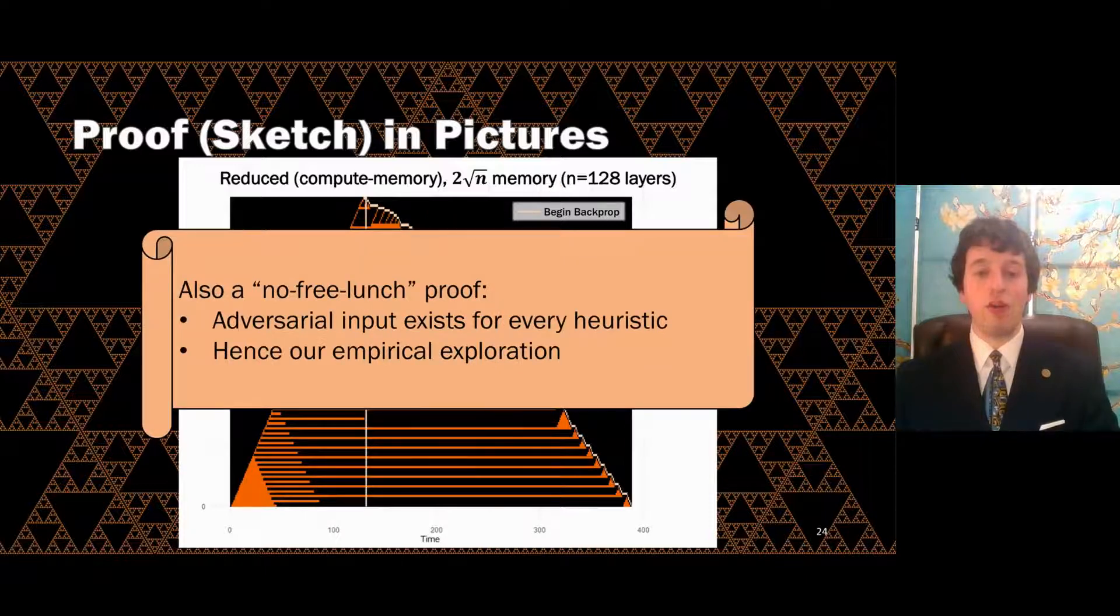In the paper, we also provide a proof showing that an adversarial example can be constructed for any heuristic, meaning that no heuristic is perfect, which motivates our empirical exploration of more heuristics.